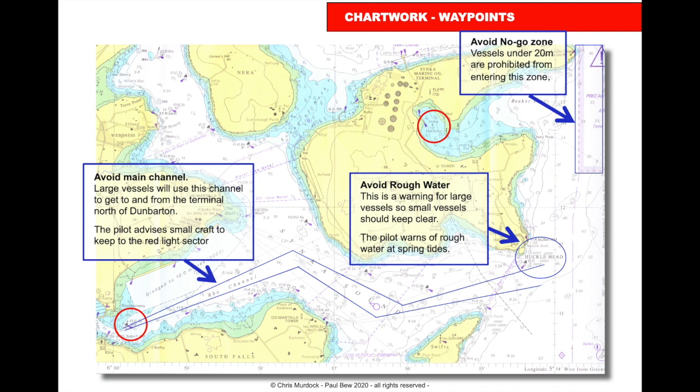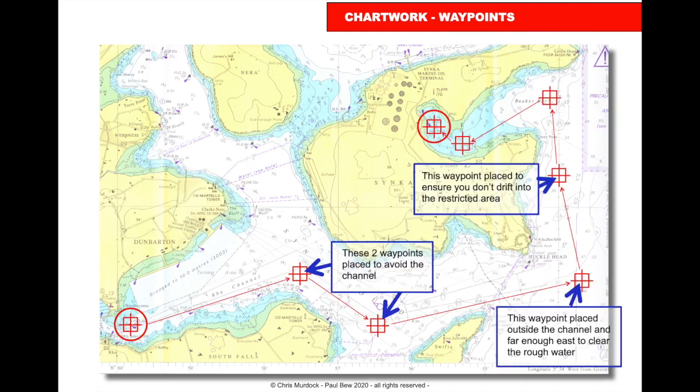In the top right there's an area marked as a no-go zone — vessels under 20 metres are prohibited from entering. So we've checked it: we know where the dangers are and the areas we can't go, and now we can start plotting our waypoints for the route.